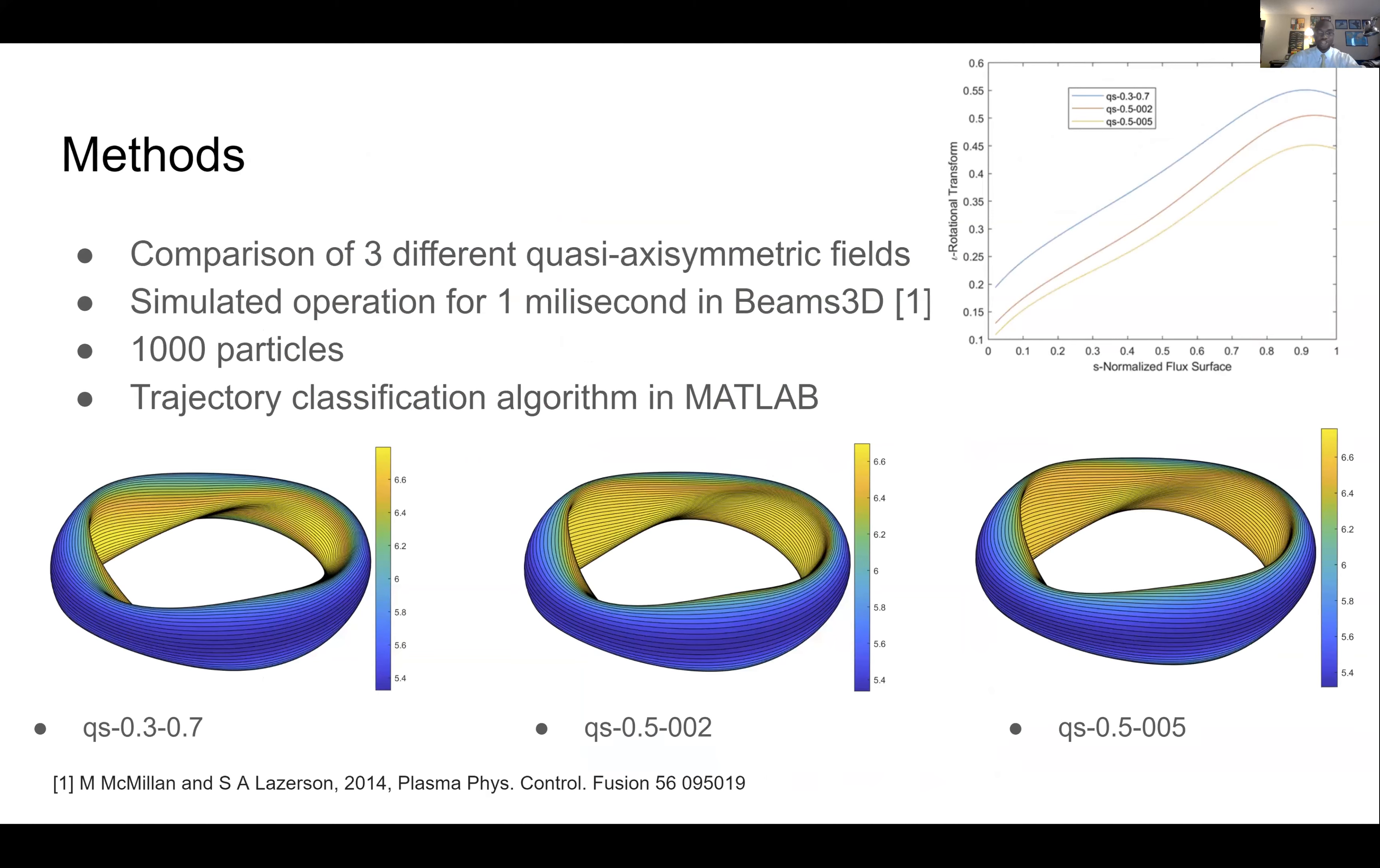So for our project, we compared three different fields and simulated their operation for about one millisecond using 1000 alpha particles in a software called BEAMS3D. This is software specifically designed for stellarator operation. We took the results from BEAMS3D and I ran them through a MATLAB code that I wrote to study their trajectories and their loss characteristics.